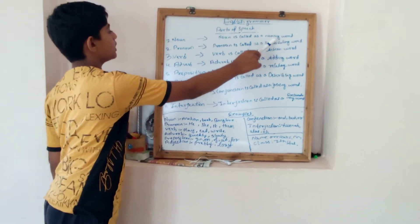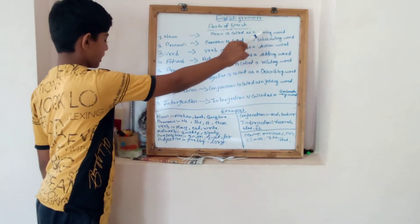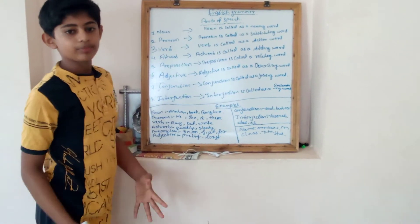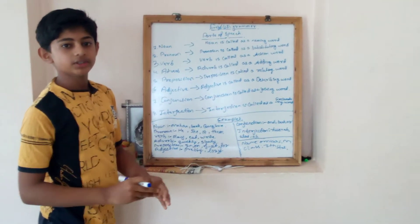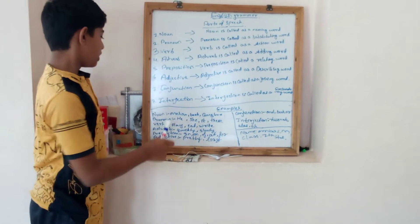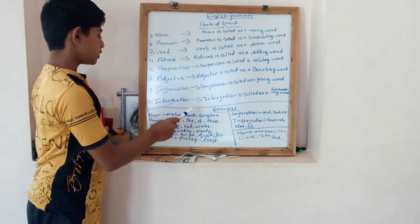Then what is noun? The noun is called as a naming word. Example, there are place, animals and humans. Like Mohan is a human, book is a thing,